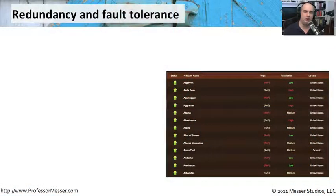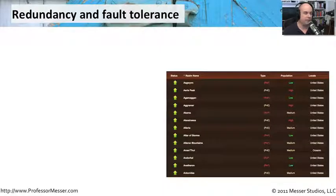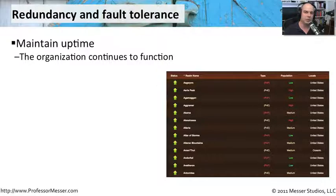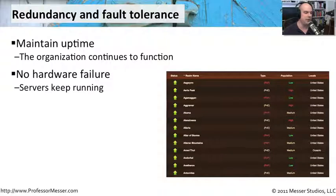Whenever we think of keeping all of our systems up and running in an environment, we very often think about what could happen if we lose a server, if we lose a router, if we lose another component within our devices. So we have to think about redundancy and fault tolerance. The idea is to keep things up and running and maintain uptime — we want to be sure that all of the systems on our network have all resources available, and that our company continues to function the way it should.